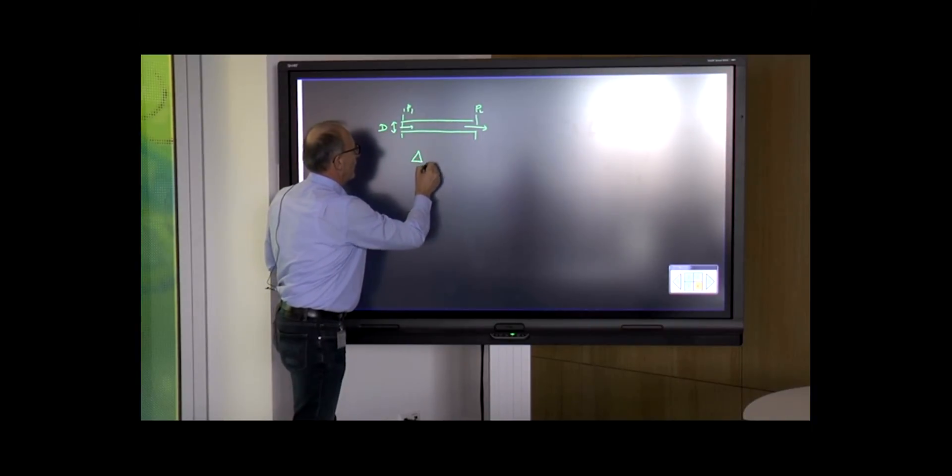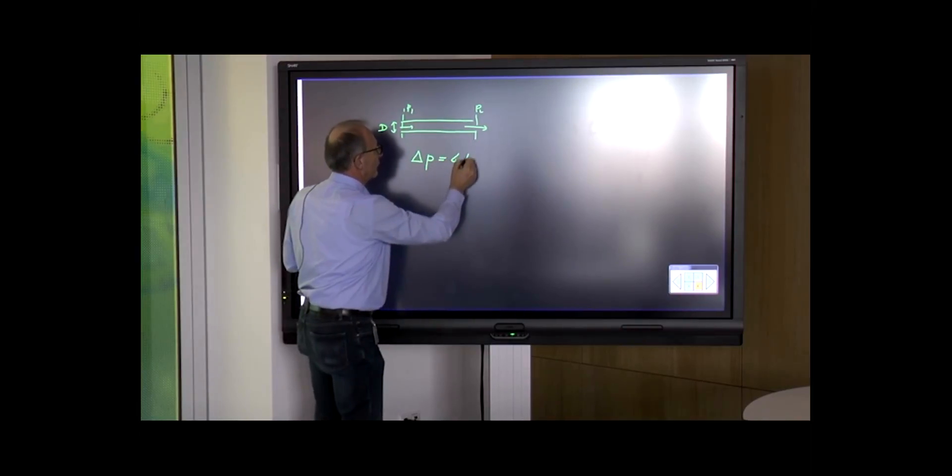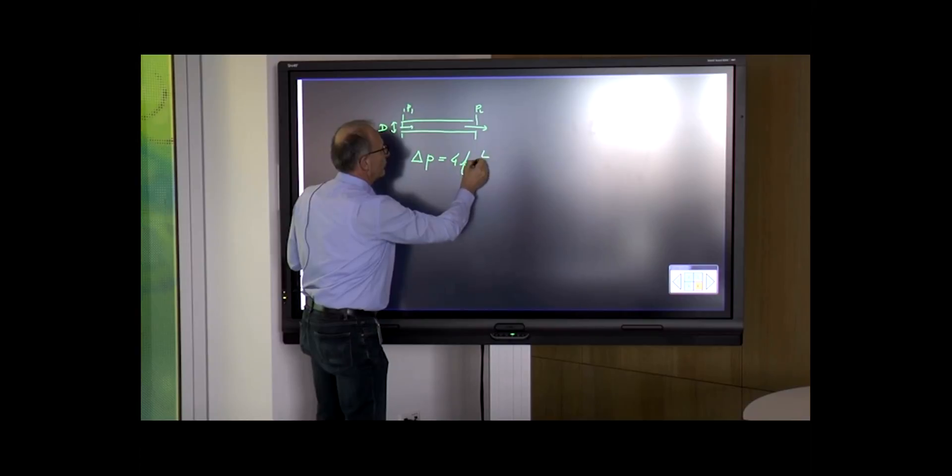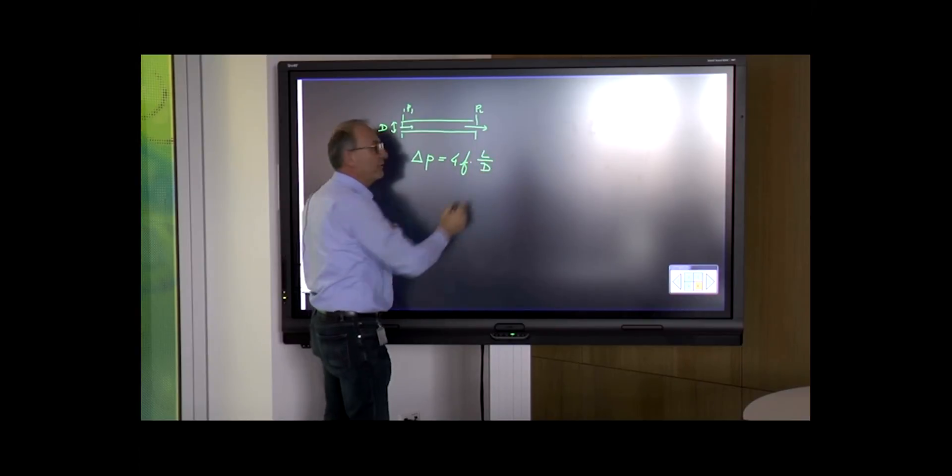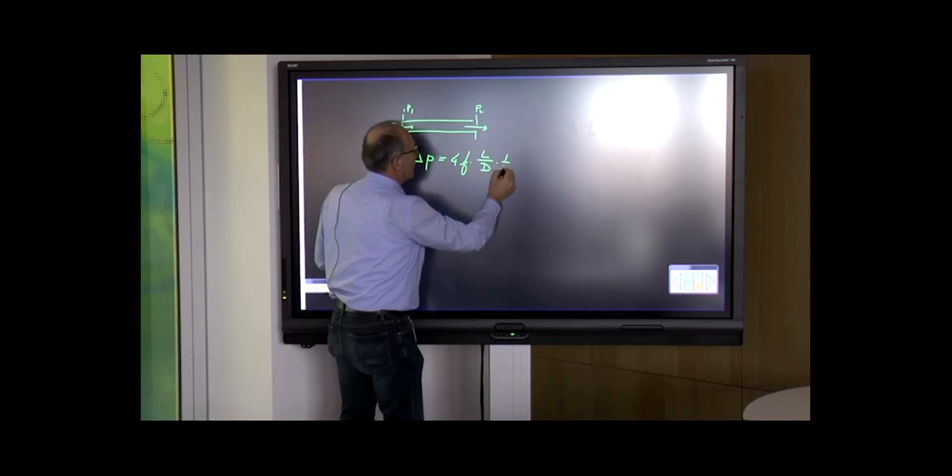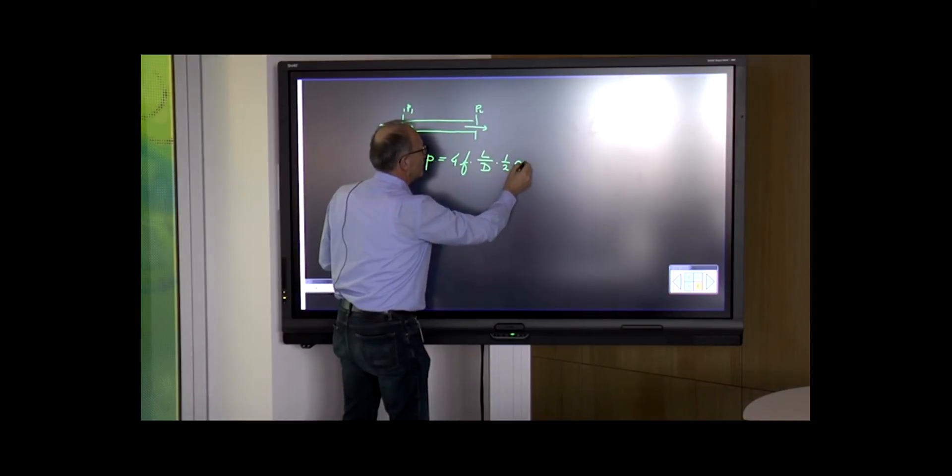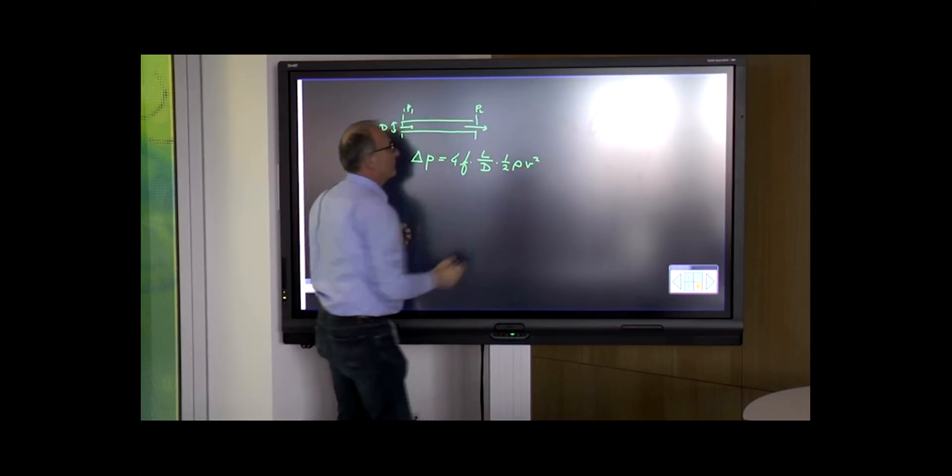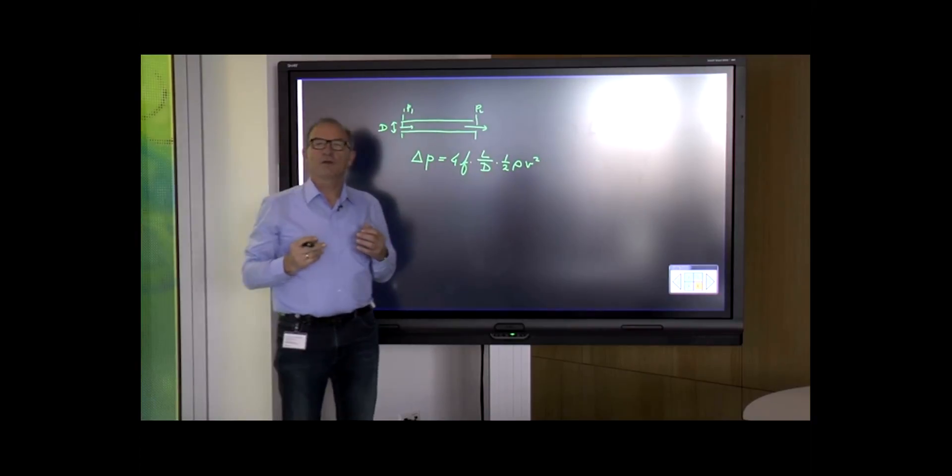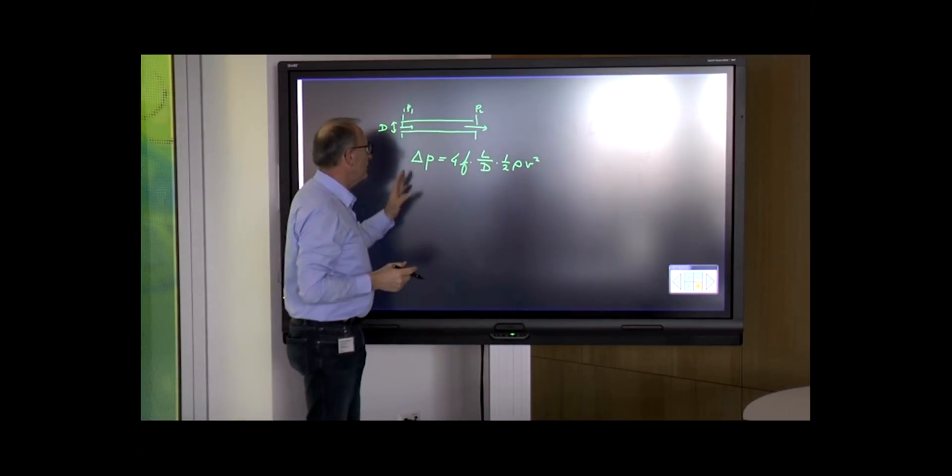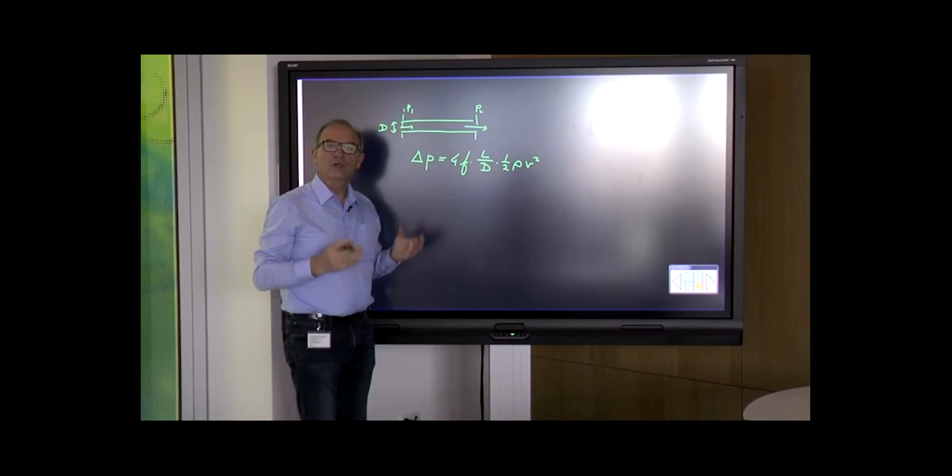The Fanning formula: delta P equals four times the friction factor multiplied by the length divided by the diameter, multiplied by the density and the average velocity squared. This is the formula we use to calculate pressure loss over a straight pipe.